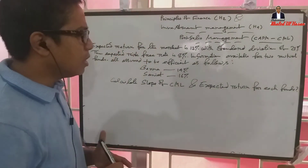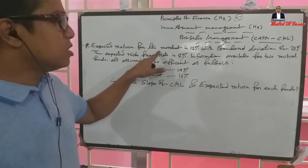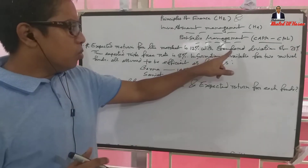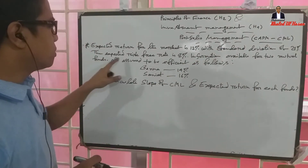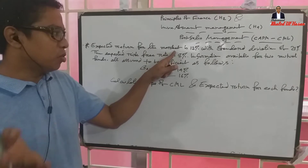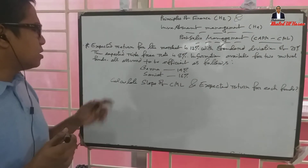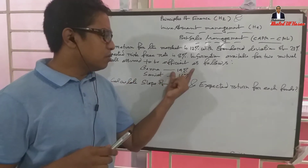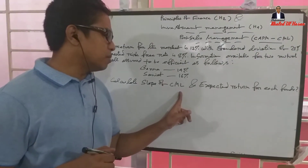Let's do the math. The expected return for the market is 12%. The standard deviation is 21%. The expected risk-free rate is 8%. We have information available for two mutual funds, and all assets have to be efficient.